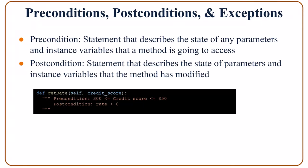When we develop a program, we need to define preconditions, postconditions, as well as exceptions when the conditions are violated. A precondition is a statement about the state of any parameters and instance variables that the method is going to access. For example, when we need to get the rate for someone who would like a loan, the input to the method is credit score — if the credit score is high, then the rate is low, and vice versa.